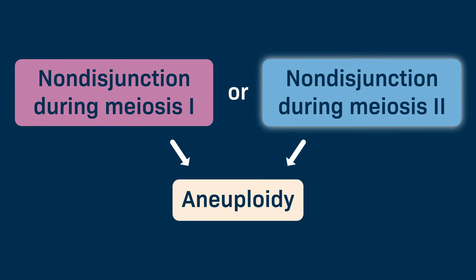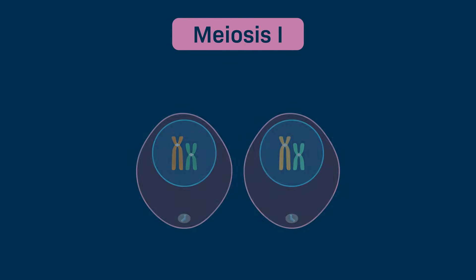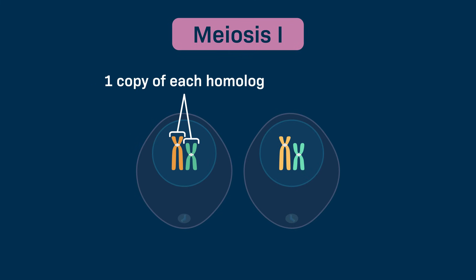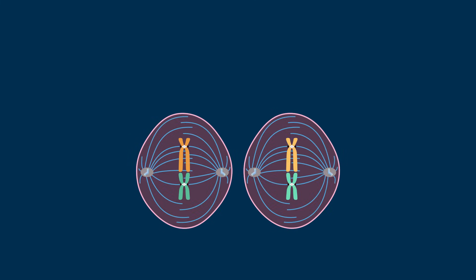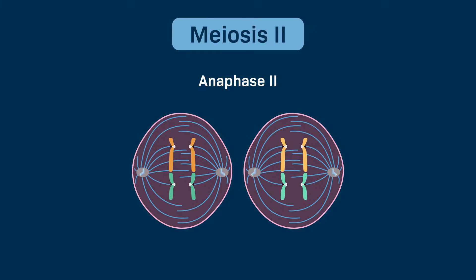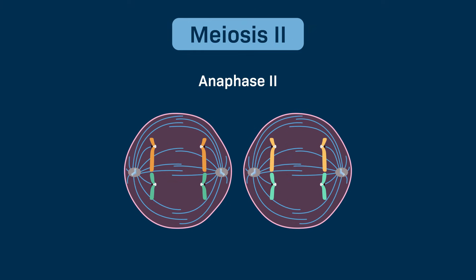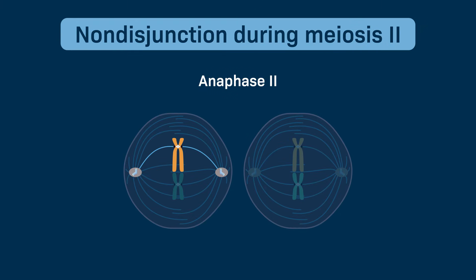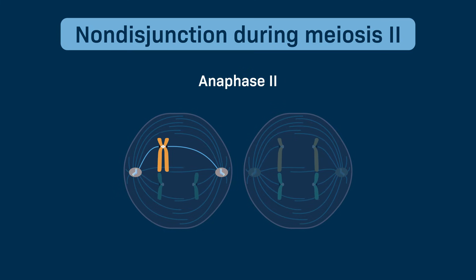Now let's focus on non-disjunction during meiosis 2. We'll assume that meiosis 1 occurred as expected, where each resulting cell received one copy of each homologue. During anaphase 2, the sister chromatids typically separate and move toward opposite spindle poles. When non-disjunction occurs, the sister chromatids of a chromosome in one of the cells don't separate properly to opposite spindle poles during anaphase 2.